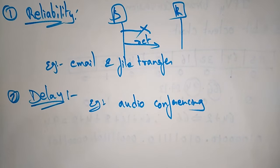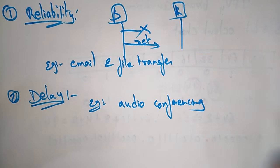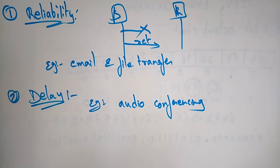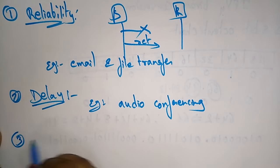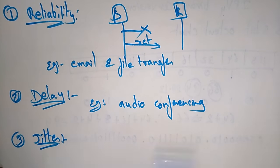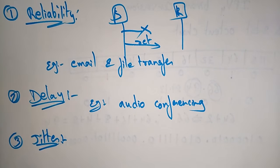Time delay in email is less important. If I'm communicating with you, after completing my word you should be able to respond. If my question is not completed and you are already responding, there is some disturbance — it is not tolerable. The time delay cannot be tolerated in audio conferencing; it needs minimum time delay. Whereas for email, time delay has less importance. That is one of the QoS flow characteristics.